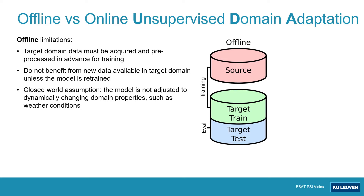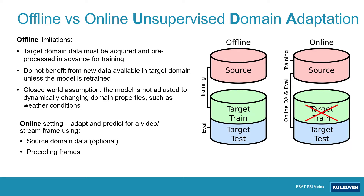That is why we propose to adapt the model to a new domain on-the-fly. The online UDA setting assumes that in order to adapt and produce predictions for a frame of a target domain video or stream, only source domain data or previous frames can be accessed.